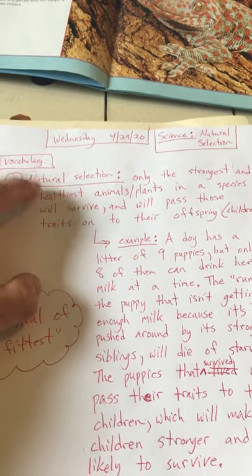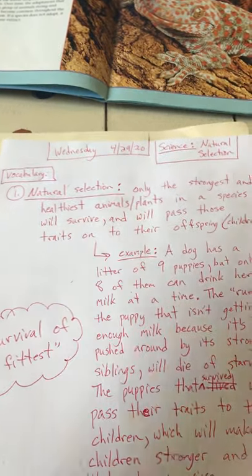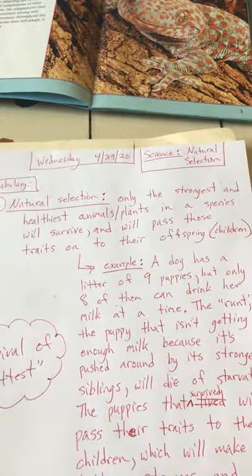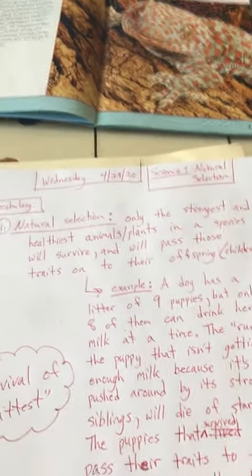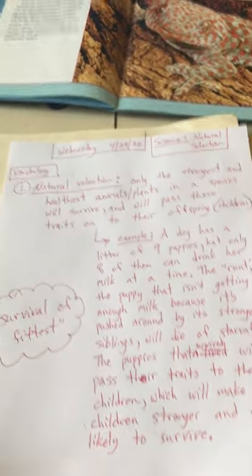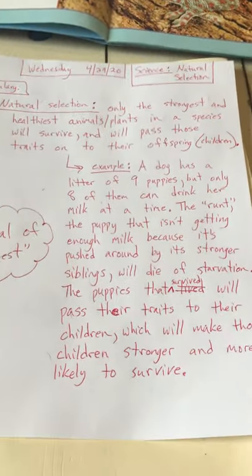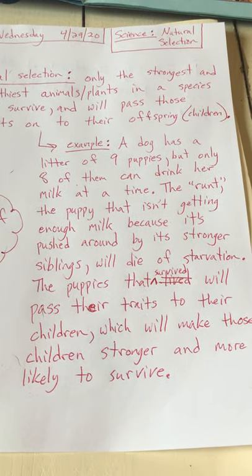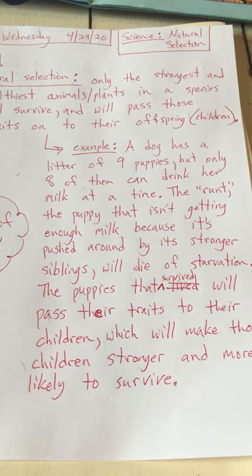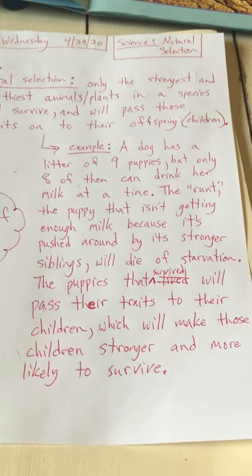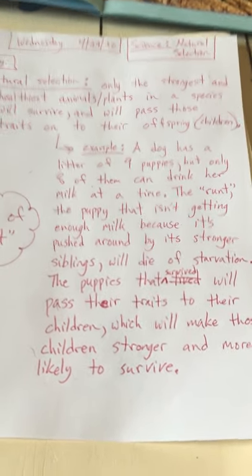Through the process of natural selection, only the strongest animals or plants in a species will survive — the strongest and toughest and healthiest wolves, the strongest and healthiest bears. Those that survive will then pass those traits onto their children, and their children will inherit them when they are born. For example, a dog has a litter of nine puppies, but only eight can drink her milk at a time. The runt — the puppy not getting enough milk because it's pushed around by stronger siblings — will die of starvation. The puppies that survived will pass their traits onto their children, making those children stronger and more likely to survive.